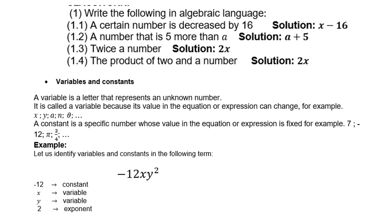A constant is a specific number whose value in the equation or expression is fixed. For example, 7, -12, π, three-quarter, etc. Example: let us identify the variables and constants in the following term -12xy². So -12 is the constant, x is the variable, y is also a variable, and 2 is an exponent.